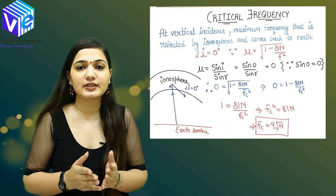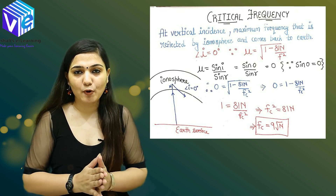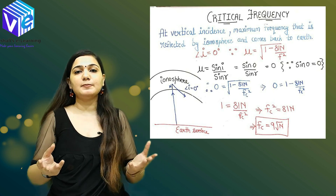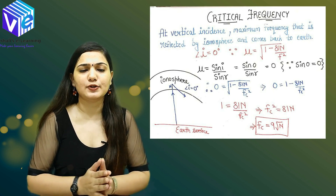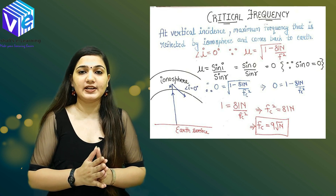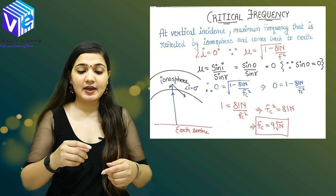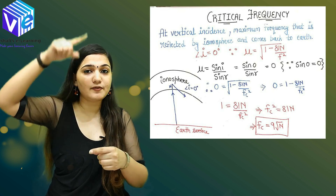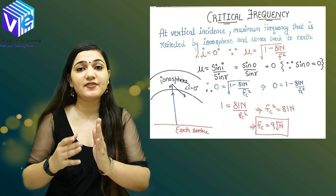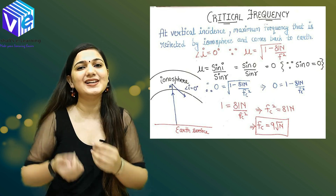Mu, which denotes the refractive index, is equal to the square root of (1 minus 81N upon F squared). We also know that mu can be represented as sin(I) upon sin(R). Now we need to know the angle of incidence and angle of reflection. When I project the wave in the vertical direction, the angle of incidence is the angle the wave makes with the normal.